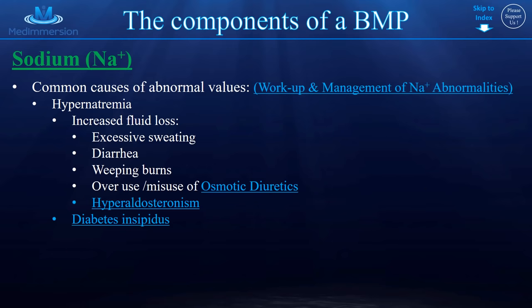For hypernatremia, think about what would increase fluid loss or make the body lose free water. Sweat can do this. Excessive diarrhea can do this. Weeping burns evaporate a lot of water while retaining ions. Osmotic diuretics osmotically pull free water from the body while ion pumps still retain other ions, so it's essentially just water pouring out, concentrating the sodium. Hyperaldosteronism can do it, and diabetes insipidus — dumping free water — also causes hypernatremia.